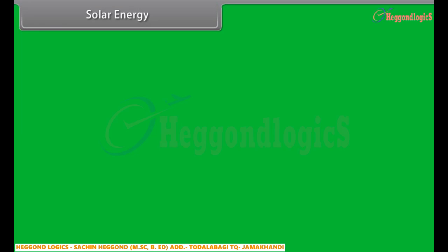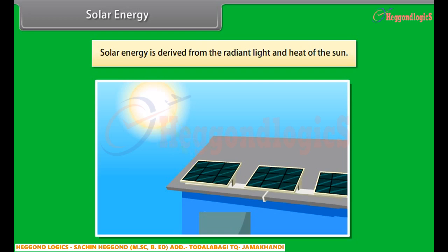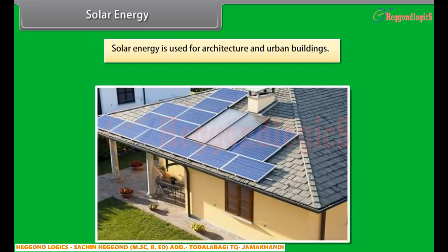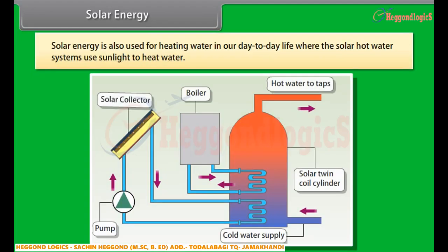Solar energy is derived from the radiant light and heat of the sun and has been used by humans since ancient times for a range of technologies. Solar energy is used for architecture and urban buildings, and also for heating water in day-to-day life. Solar hot water systems use sunlight to heat water. In low geographical latitudes, domestic hot water usage is provided at temperatures up to 60 degrees Celsius. The most common types of solar water heaters are evacuated tube collectors and glazed flat plate collectors, generally used for domestic hot water, and unglazed plastic collectors used mainly to heat swimming pools.